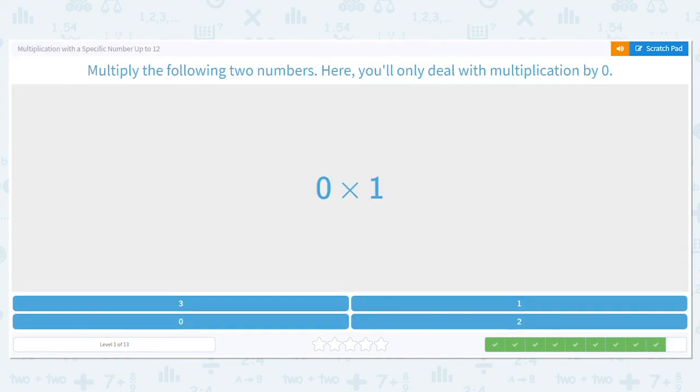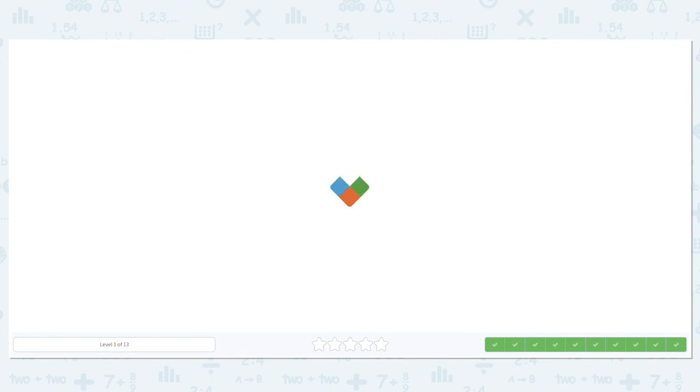And let's do one more. Zero times one. Is zero times one three, one, zero, or two? It is zero. Excellent job multiplying by zero.